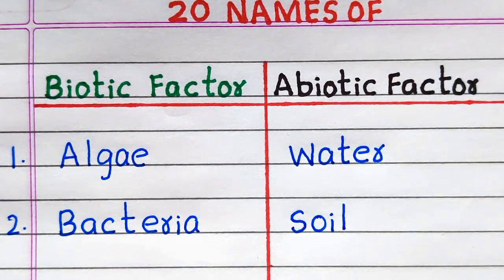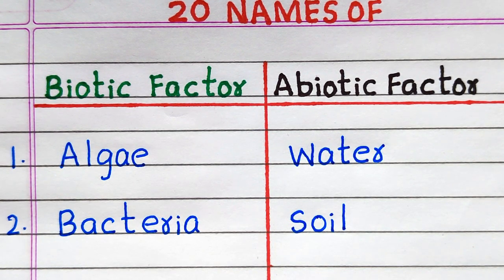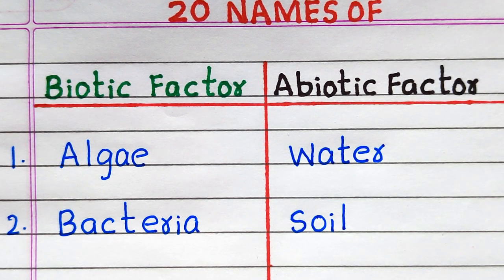First example of biotic factor is Algae. Second, Bacteria. First example of abiotic factor is Water. Second, Soil.